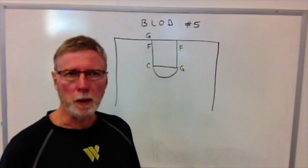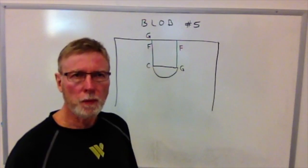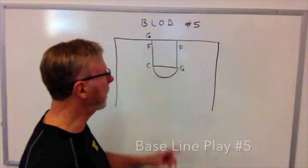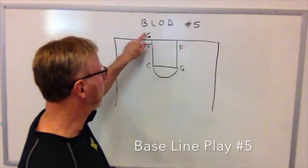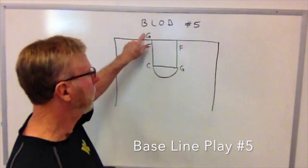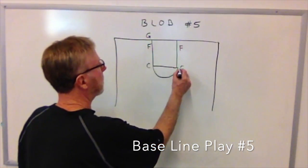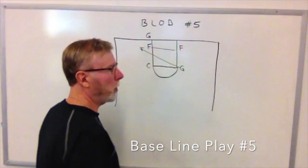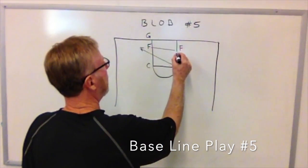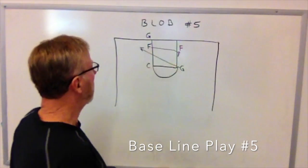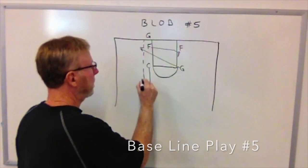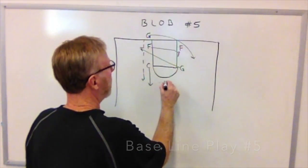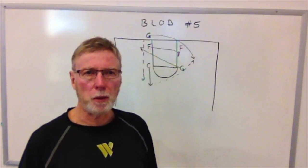On all of our out-of-bounds plays, we have the center take the ball out under the basket — except for play number five. On play number five, we have a good shooter, one of our guards, take the ball out. The guard and the center effectively change places. When the guard slaps the ball, the opposite guard breaks as if it's play number one. The forward breaks as if it's play number three and sets on the block. The center breaks out, takes the pass from the inbounder, then breaks toward the basket for the shot on baseline out-of-bounds play number five.